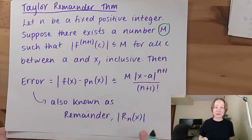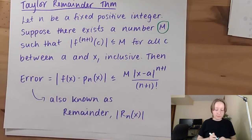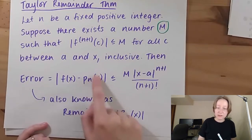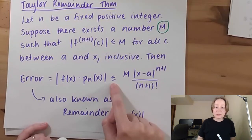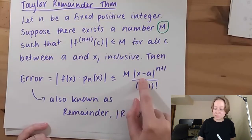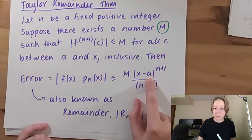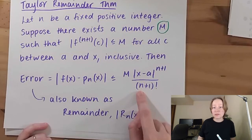Then the error in my nth Taylor polynomial is given by the absolute difference between the actual function and the approximation — this is a function of x. There is an inequality, and the error is bounded by that constant M multiplied by the absolute distance between the point of evaluation x and a, the center of approximation, all to the n+1 power, and all over n+1 factorial.